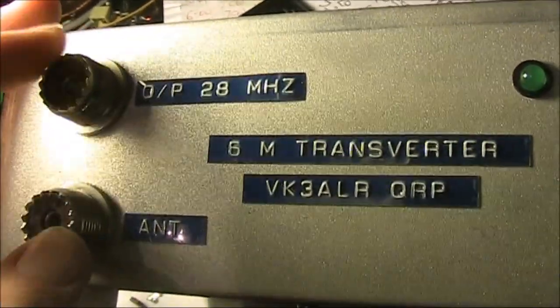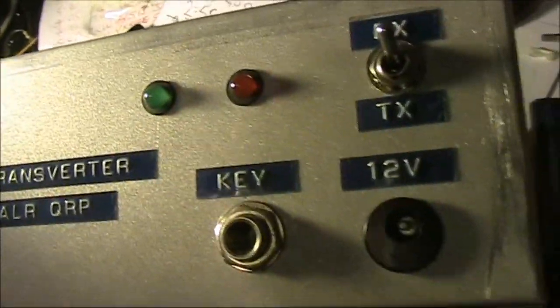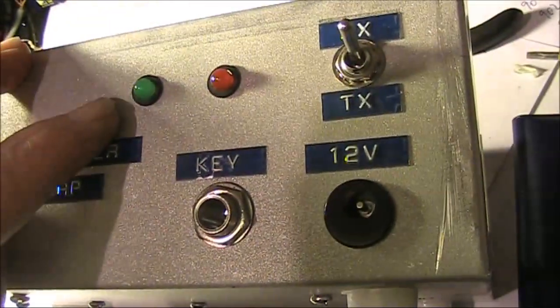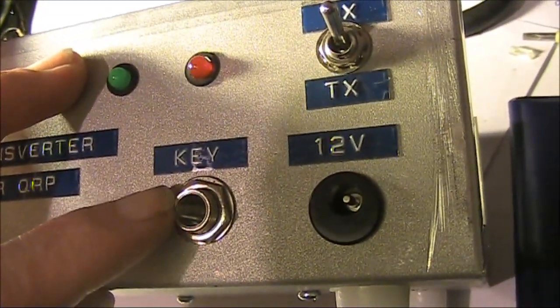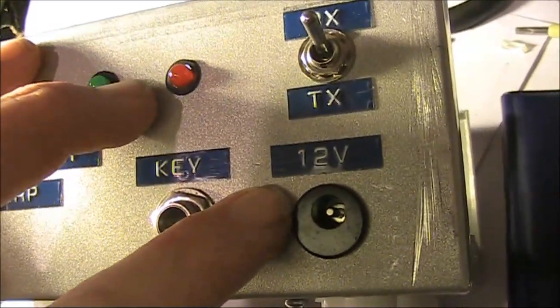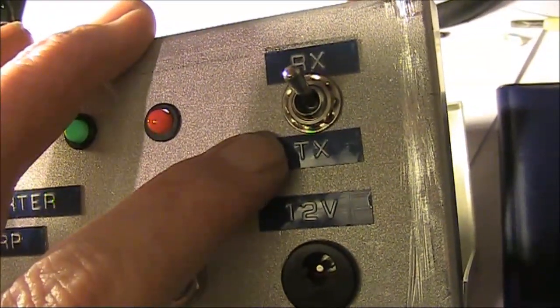Antenna socket, the IF of 28 MHz. Presumably receive and transmit LEDs. Oddly a key socket, 12 volt power in, and a manual transmit receive switch.